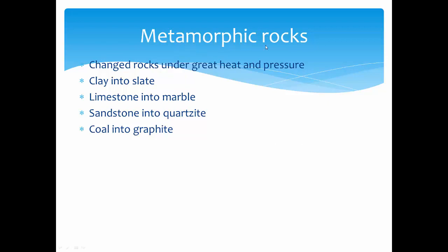Metamorphic rocks are the third type. They are formed due to great heat and pressure inside the Earth's crust, which changes their original properties and makes them crystalline in structure. Both sedimentary and igneous rocks can become metamorphic. Clay becomes slate; limestone becomes marble — marble is used in buildings like the Taj Mahal. Sandstone becomes quartzite, becoming harder. Coal becomes graphite, which is used in pencils.